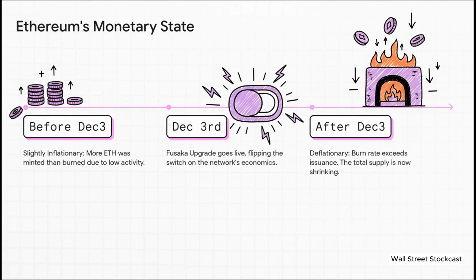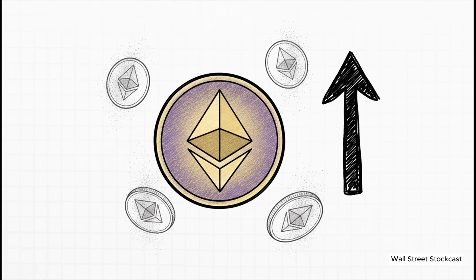And to really get how big a deal this is, you have to look at the history. For about six months before this upgrade, Ethereum was actually slightly inflationary. More ETH was being created from staking than was being destroyed through the burn. December 3rd, that's the day. That's the moment it all flipped on its head. The network's entire monetary policy changed overnight, from inflationary to definitively deflationary. And this brings us back to that term you hear thrown around a lot in crypto circles. Ultrasound money. The idea is pretty simple. An asset whose total supply is actively going down is a superior form of money. With this Fusaka furnace now burning hotter than the rate of new ETH being created, Ethereum, according to this view, has firmly stepped back into that territory.